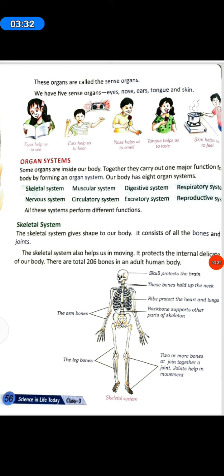The 8 organ systems are: skeletal system, muscular system, digestive system, respiratory system, nervous system, circulatory system, excretory system, and reproductive system. All these systems perform different functions.